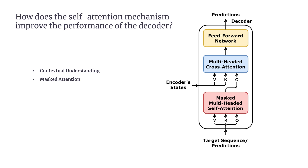Second, masked attention: one critical feature in the decoder is masked self-attention. When generating a sequence, the decoder must only rely on tokens it has already predicted, not ones it hasn't yet generated. Masking ensures that future tokens are hidden during training, forcing the decoder to produce outputs sequentially and logically — just like writing a sentence word by word. This property prevents information leakage and ensures coherence in tasks like text generation or translation.